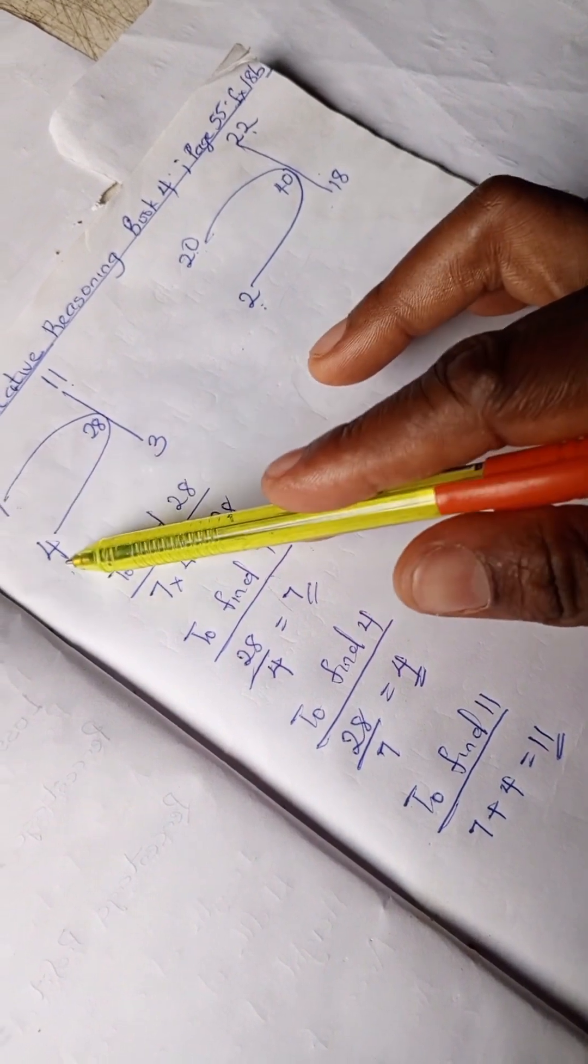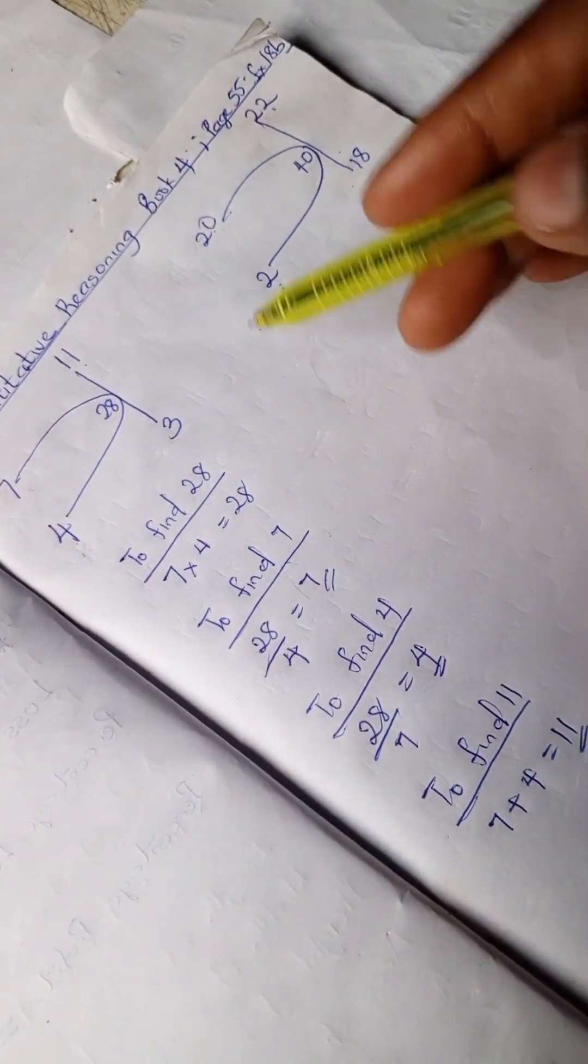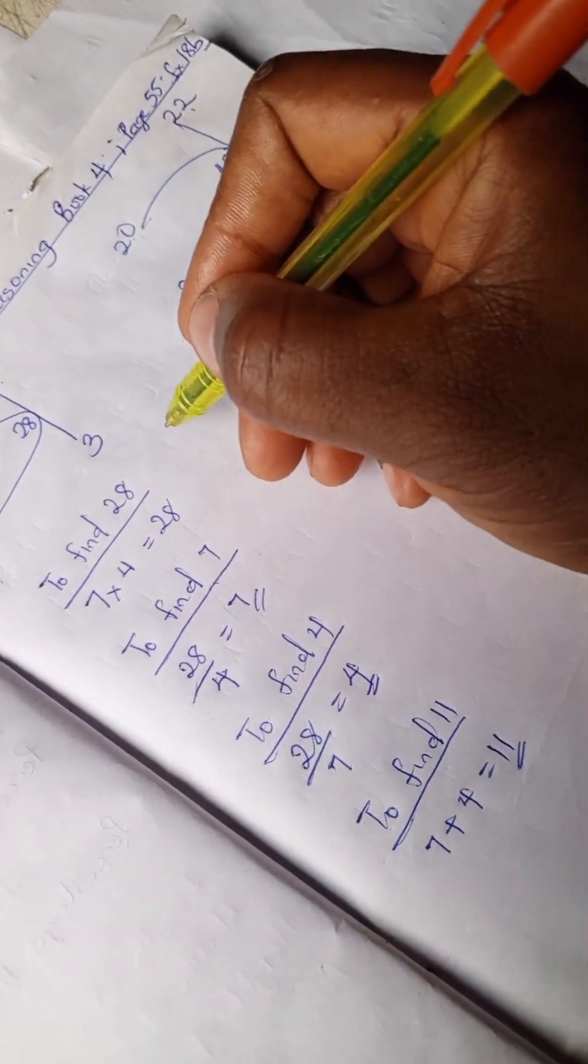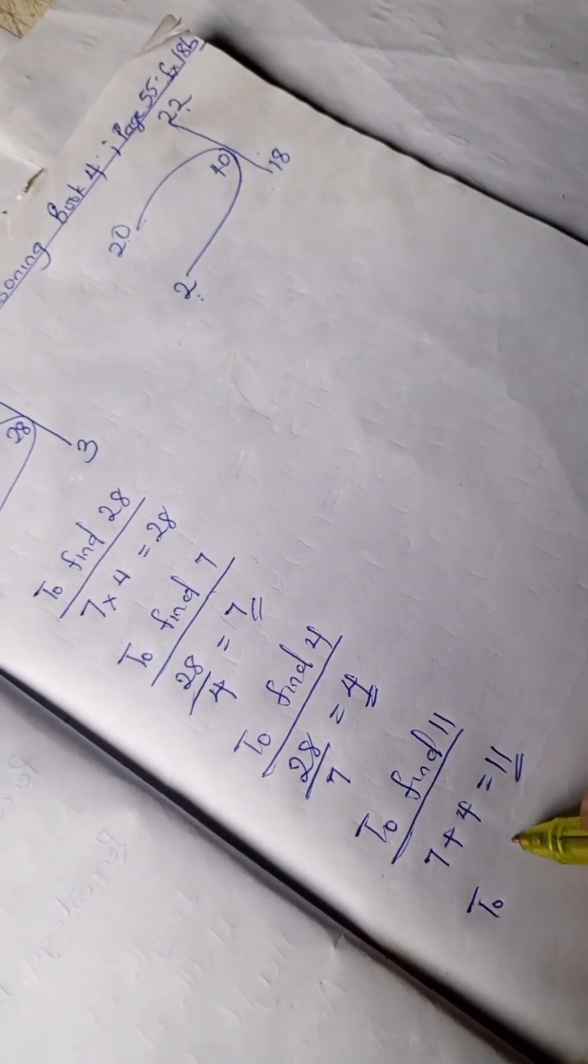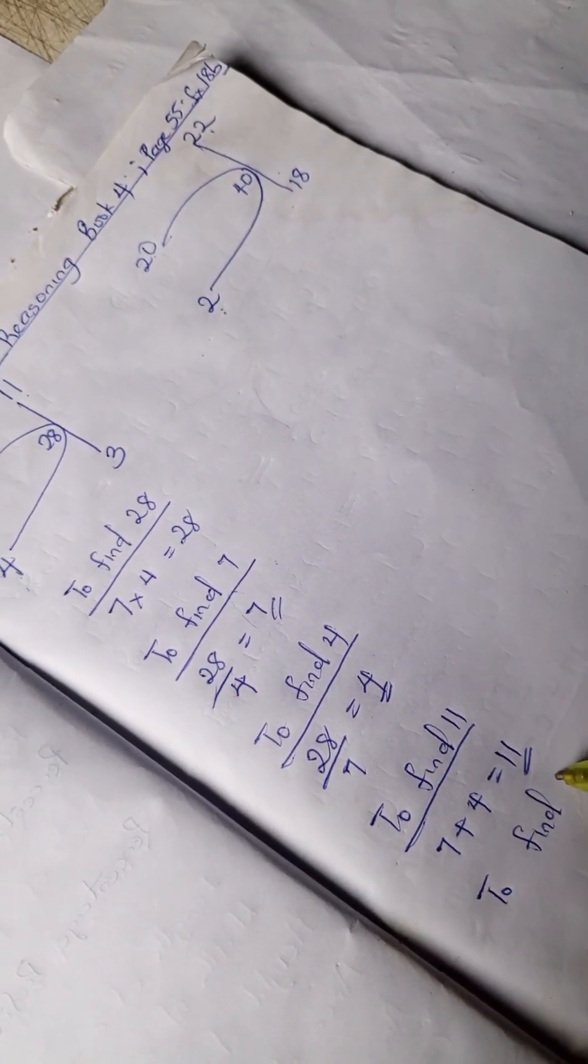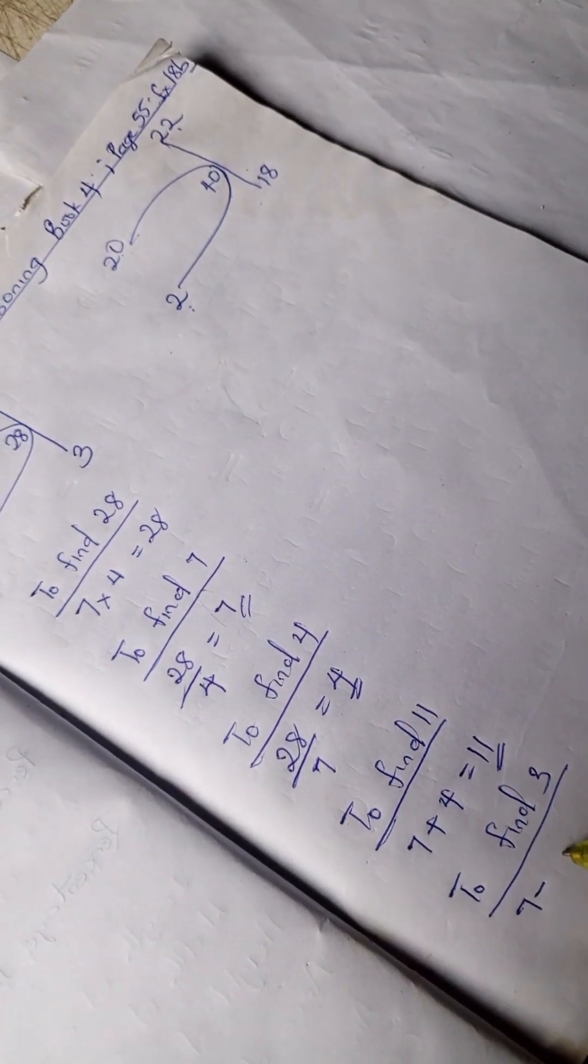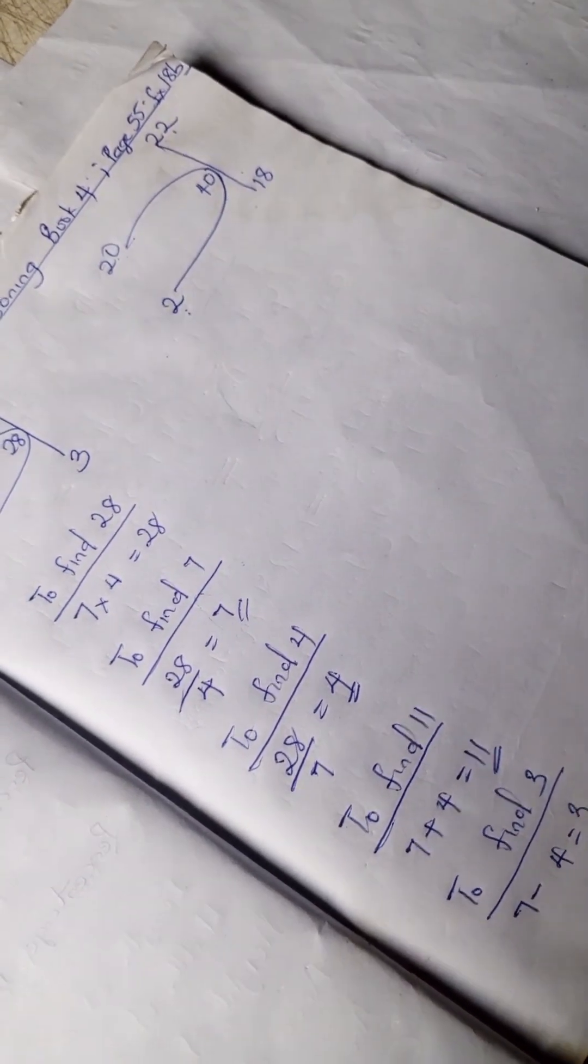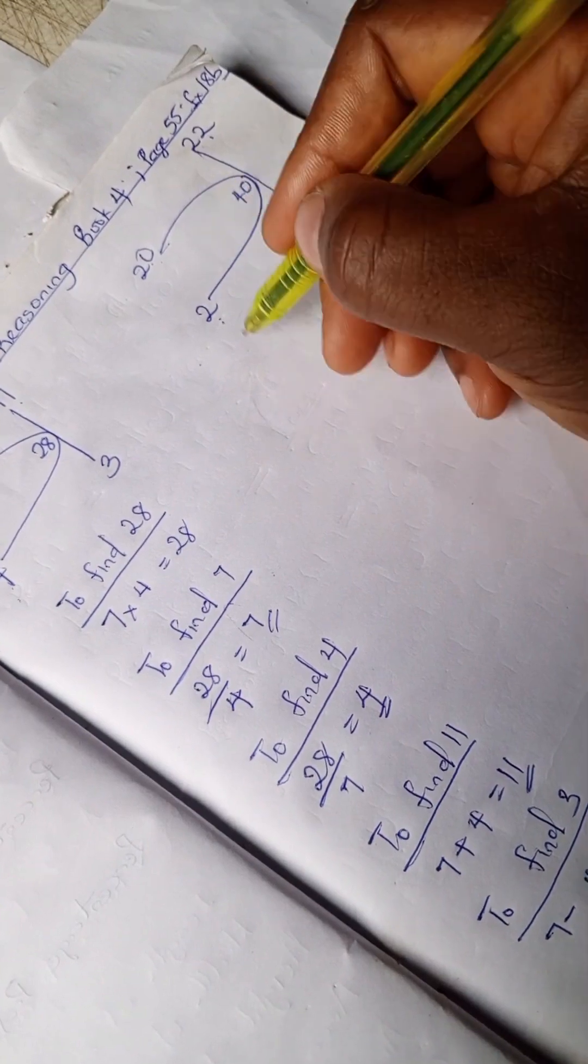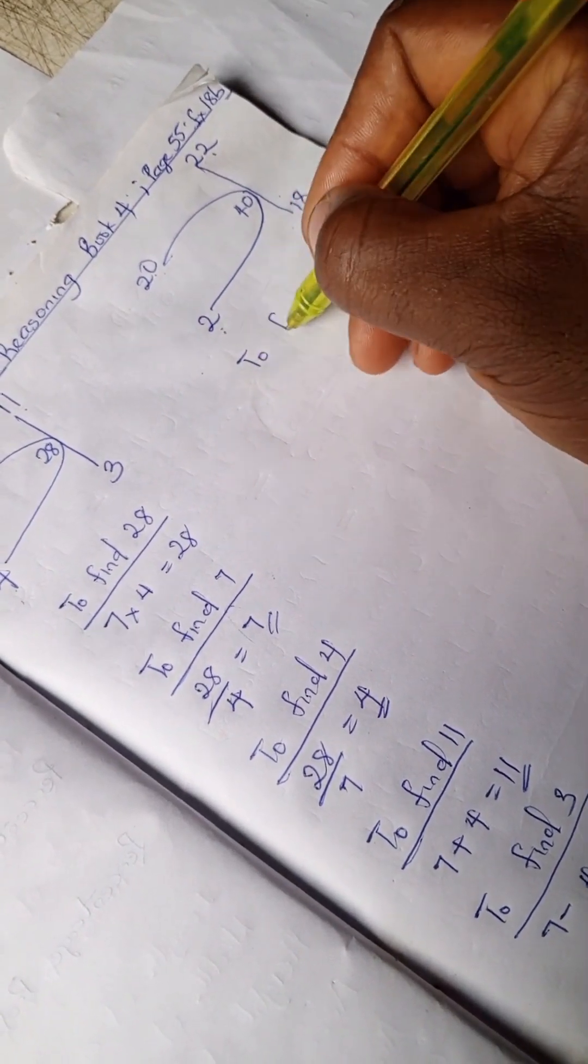You can also subtract. So to find 3, you have 7 minus 4 is 3. All right, so let's do the same for this.